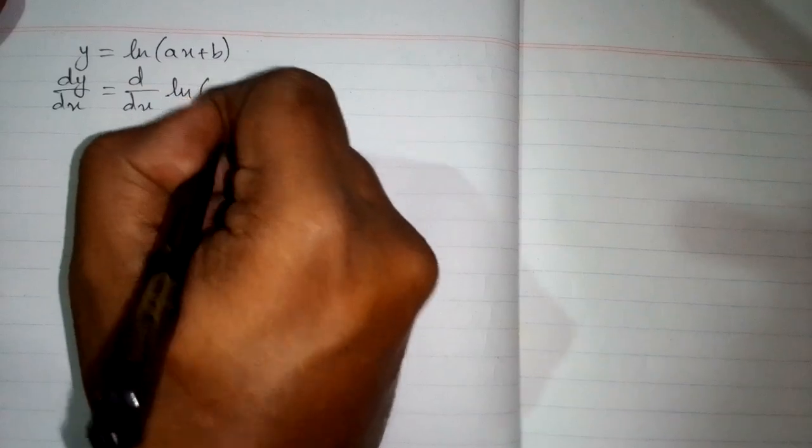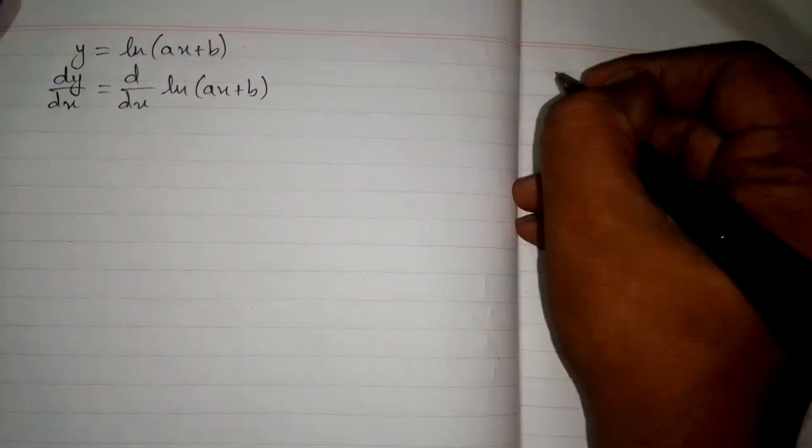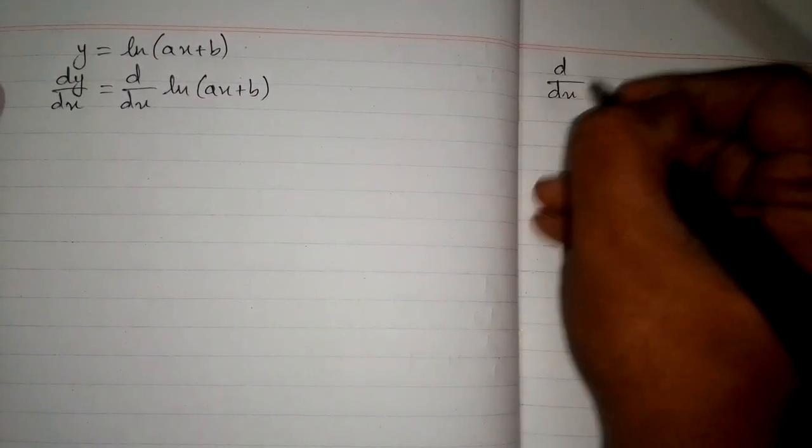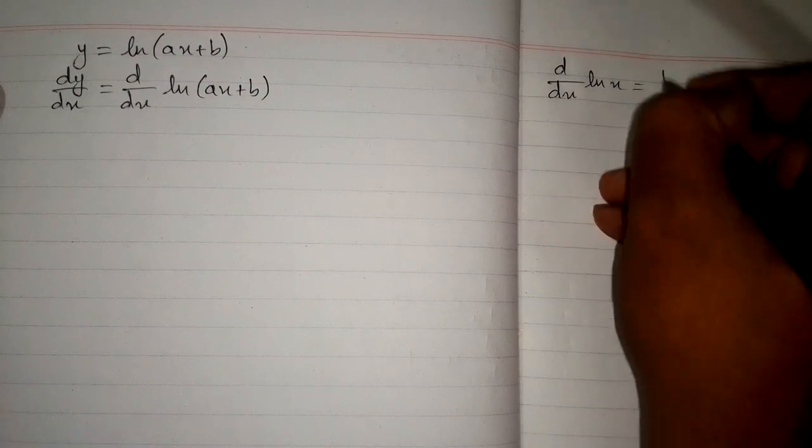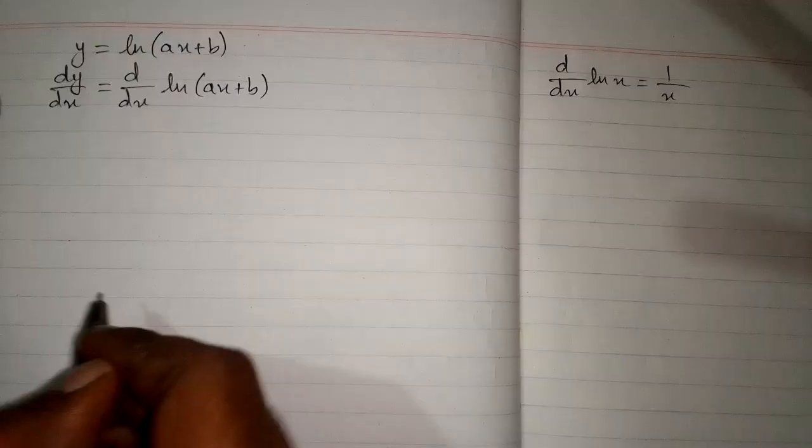So first differentiating both sides with respect to x, we have dy/dx equals d/dx of ln of ax plus b. We know that the derivative of ln of x is 1 upon x, where ln is the natural logarithm.